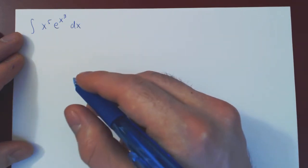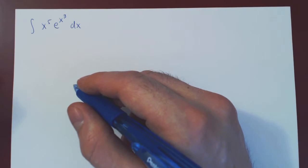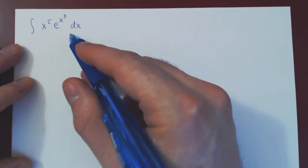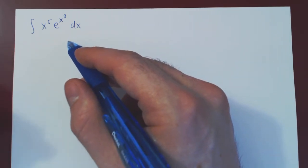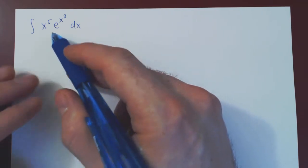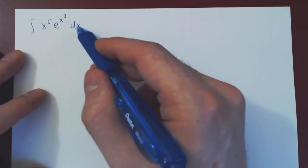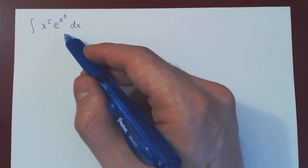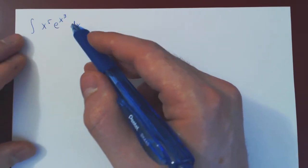If you remember our previous video, we considered an integral that was solved using first integration by parts, then a u-substitution. The reason why this integral is nice is it's the mirror image of the previous problem. To integrate x to the 5 e to the x cubed dx, we must first make a u-substitution and then apply integration by parts.